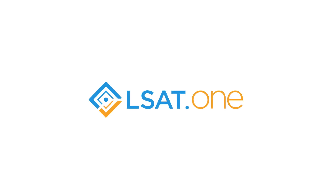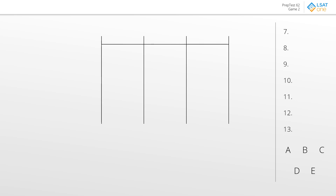For this game we have roughly a grouping game with three windows, which we'll label one, two, and three. The window numbers don't matter too much. The elements are G, O, P, R, and Y. We're told there will be at least two colors in each window, which means some colors will definitely show up in more than one window.